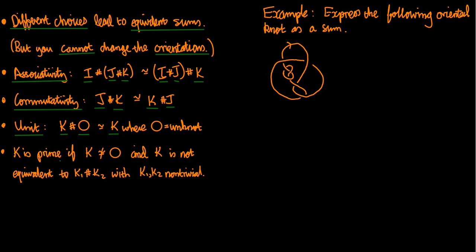Now here's a definition. K is prime if K is not equivalent to the unknot and it's not equivalent to anything of the form K1 sum K2 with K1 and K2 themselves non-trivial. This is like saying that a number is prime if it's not equal to one and it's not equal to a product of two numbers that are not equal to one. So this is a bit like the definition of prime number. And we're going to see examples of prime knots later on in the course, and prime knots are going to be useful to us because those are the ones we list in the knot table.